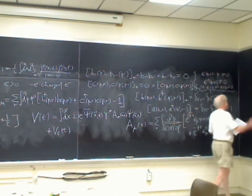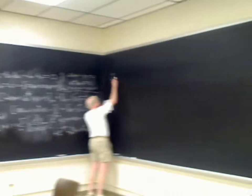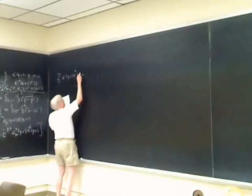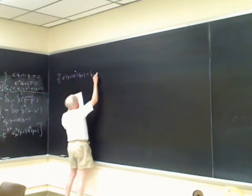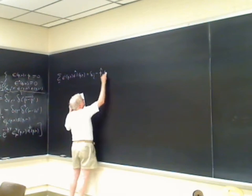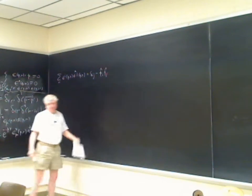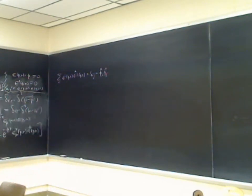We also have the completeness relation: the sum over R of epsilon-i of p,R times epsilon-j-star of p,R equals delta-ij minus p-i-hat times p-j-hat. This is something we've been using all along in order to deal with sums over or averages over initial and final state polarizations.